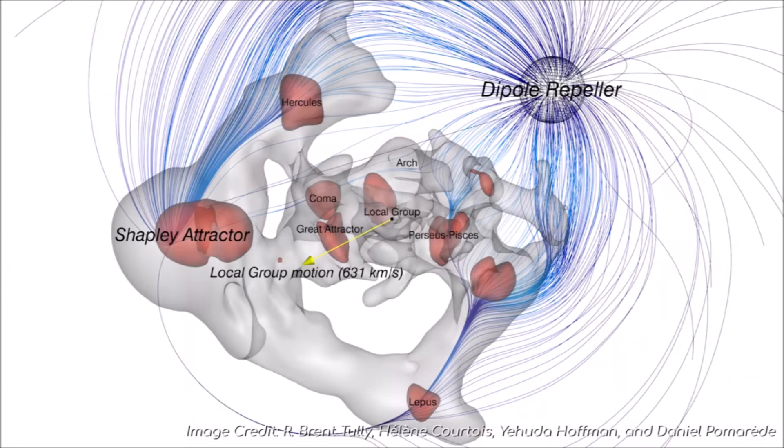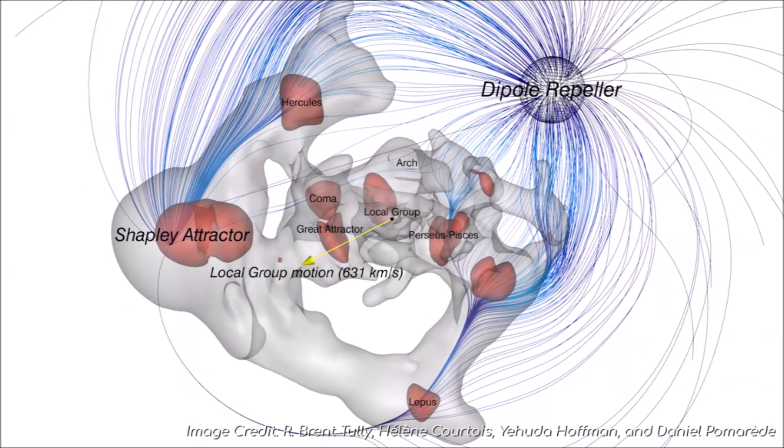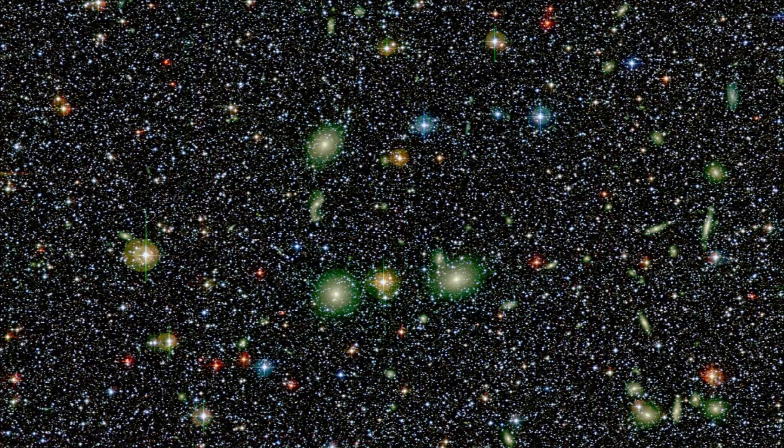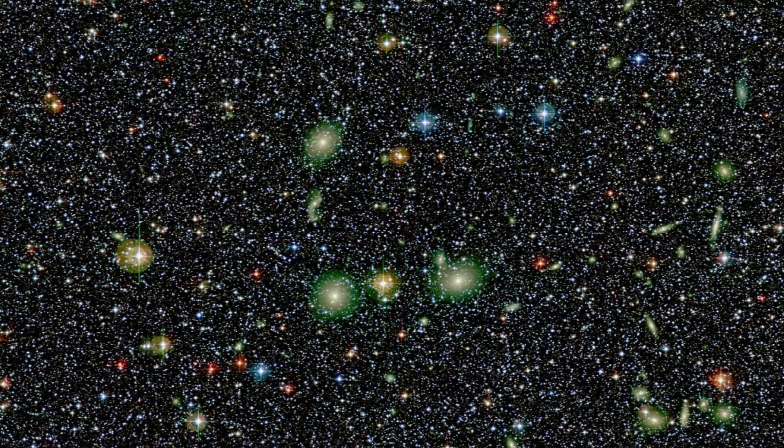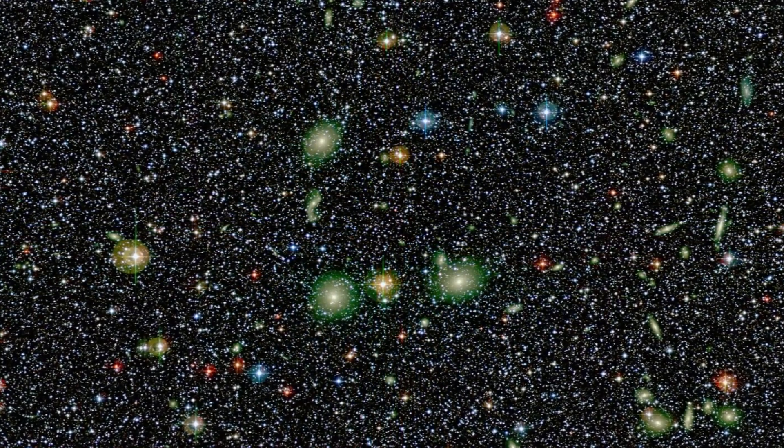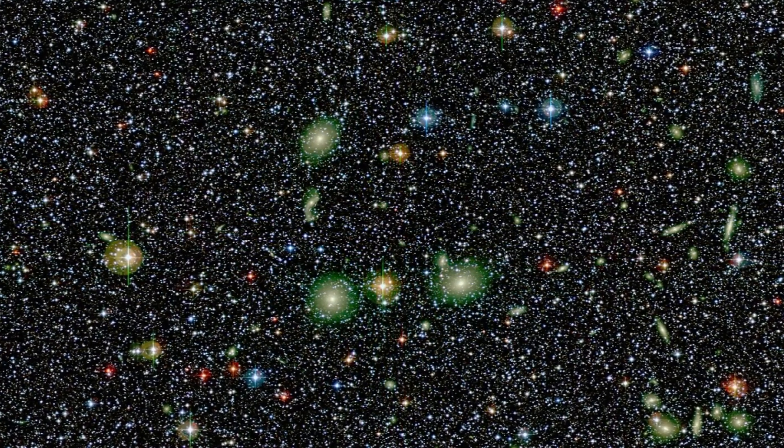In fact, this object is moving towards an even more massive supercluster, which our galaxy is also moving towards. The Great Attractor may be a super galaxy greater than we have ever seen, a tightly knit group of galaxies, or perhaps something else entirely.